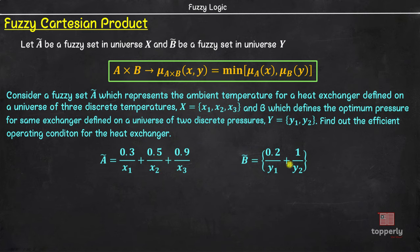Similarly, we can say that y2 is a more optimum pressure than y1 as y2 has a membership value of 1 compared to 0.2 of y1. Now, to find out the efficient operating condition, let us find out A x B which represents the different operating conditions. So, let us write down the matrix x1, x2, x3 and y1, y2.